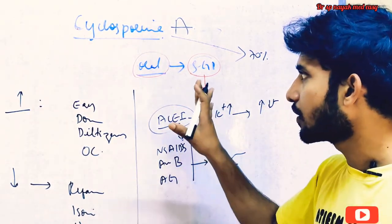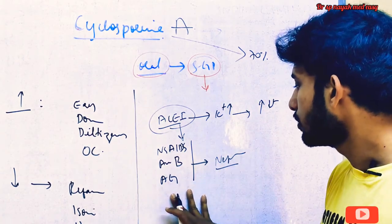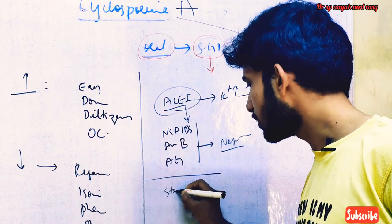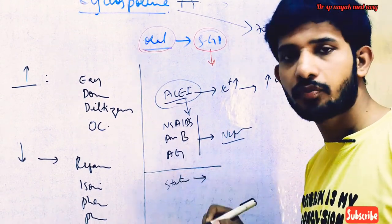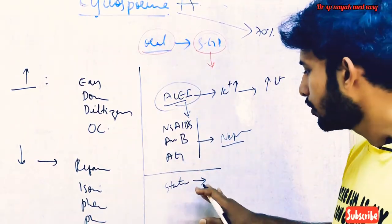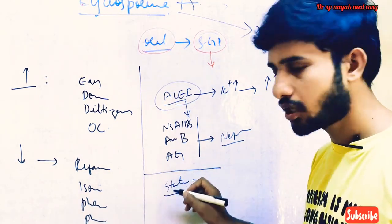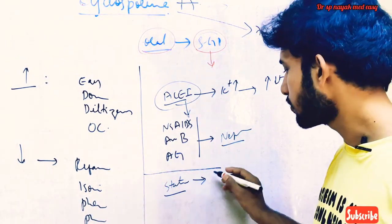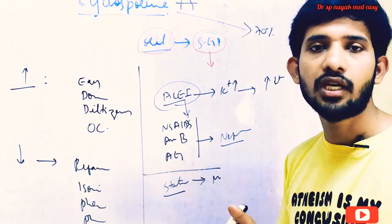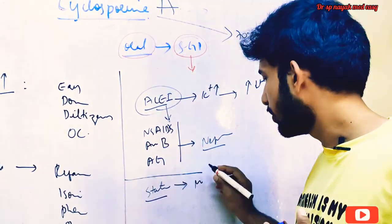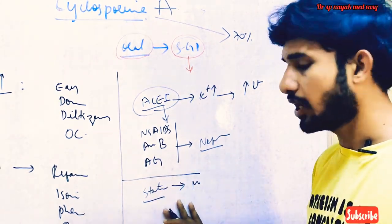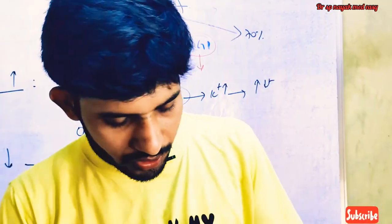Statins (HMG-CoA inhibitors) cause myopathy and liver failure. When statins are given along with cyclosporine, which also causes myopathy, the breakdown of muscles increases even further — that is a major drug interaction. These are some of the important drug interactions of cyclosporine.